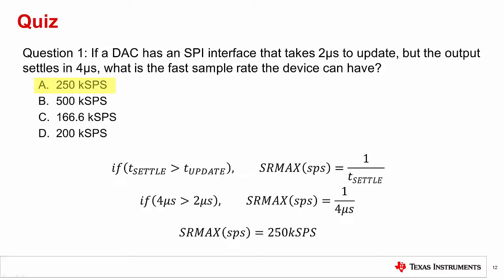The answer is A: 250 kS per second. In this case, the output settling time is the limiting factor in the device's fastest sample rate. If the settling time is four microseconds, then the max sample rate is 250 kS per second.